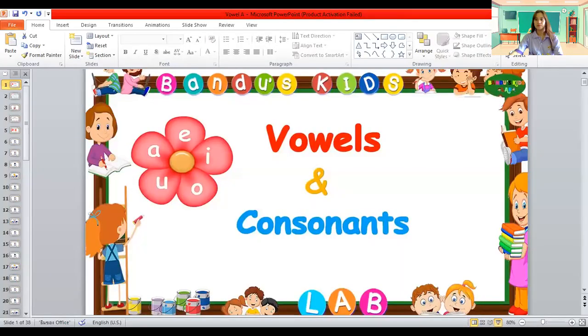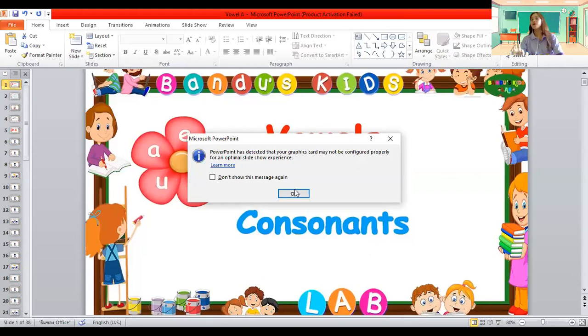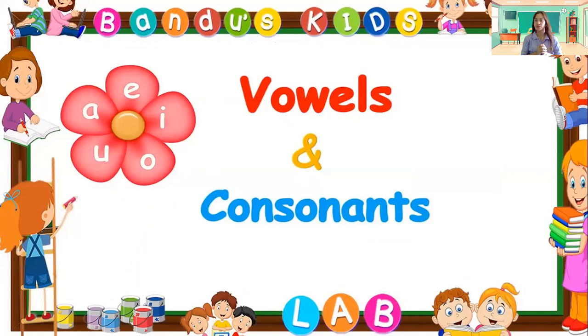Very good. Okay, let's proceed to our lesson today. Are you ready? Let's begin. Alright, students, look at the picture. What do you see? Vowels and consonants. What are vowels and consonants? Listen. Vowels and consonants are the two kinds of letters. Letters have two kinds: vowels and consonants.